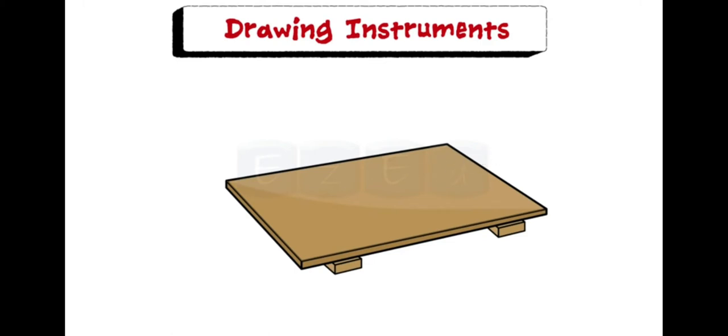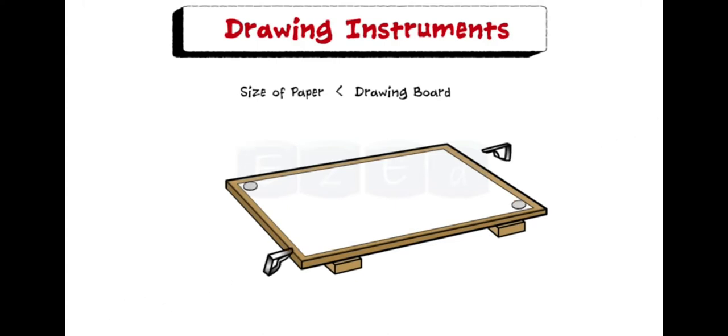While selecting a drawing paper, we have to be sure that the size of the paper is smaller than the drawing board. To hold the drawing paper, we use pins or clips or adhesive tapes; mostly we'll use clips. Pencils are basically used to draw. The accuracy and appearance of a drawing depends on the quality of the pencils used. There are three types of pencils: H, 2H, and HB are mostly used.